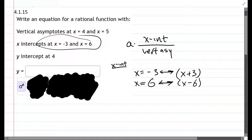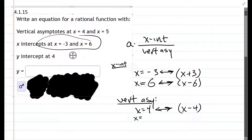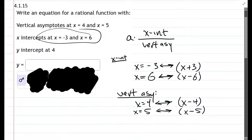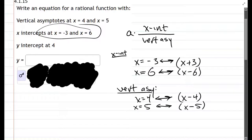Now we have vertical asymptotes. x equals four, and that corresponds to x minus four. And we have x equals five, and that corresponds to x minus five. There's no information about crossing and bouncing, so we're going to assume all the powers or multiplicities are one.